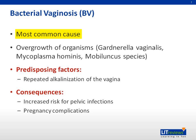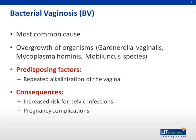Bacterial vaginosis is the most common cause of vaginal discharge in women of reproductive age. However, up to 50% of women with a clinical diagnosis of BV are asymptomatic. BV is due to an overgrowth of organisms when there is an alteration of normal vaginal flora, causing a loss of lactobacilli, thus disrupting the pH balance and increasing the pH. The organisms responsible are predominantly anaerobic, and include Gardnerella vaginalis, Mycoplasma hominis, and Mobiluncus. An isolation of Gardnerella vaginalis alone should not be used as a diagnostic test for BV, as between 35% to 55% of women are carriers of this organism. Predisposing factors include repeated alkalinization of the vagina, for example, douching and frequent sexual intercourse.